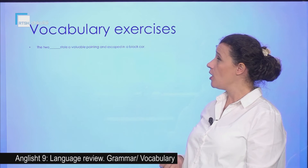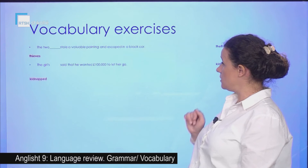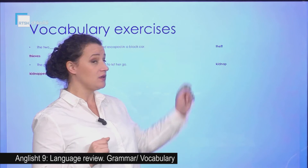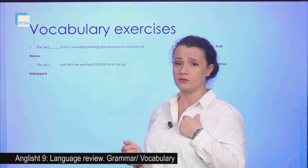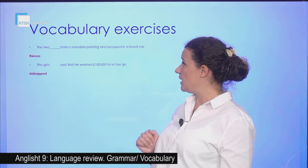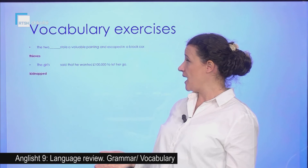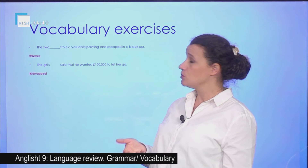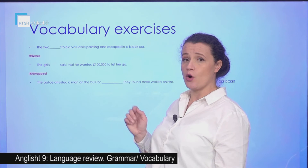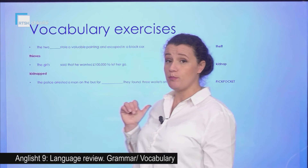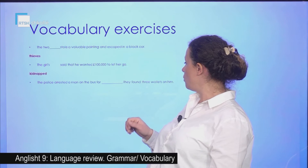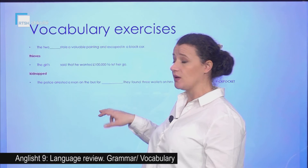We have to choose. We have the words theft, kidnap, and we have to put them in the correct order. So: the two thieves stole a valuable painting and escaped in a black car. The girl was kidnapped — the kidnapper said that he wanted 100,000 pounds to let her go. The police arrested a man on the bus for pickpocketing — they found three wallets on him.